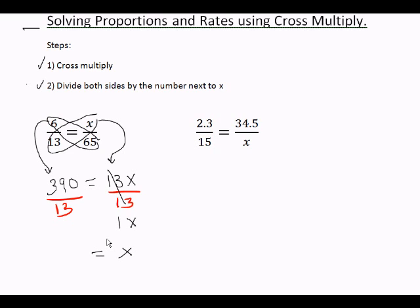390 divided by 13 on my calculator is 30. So the answer to this problem is x equals 30.